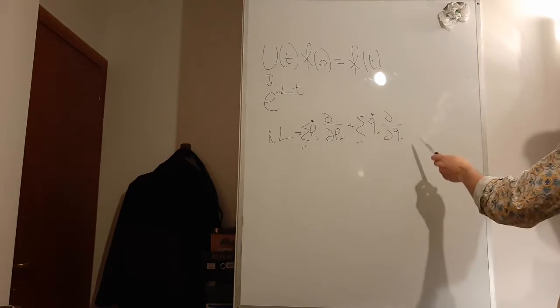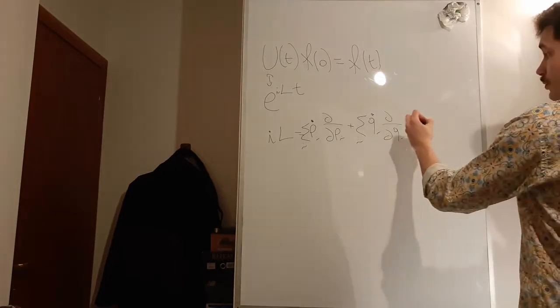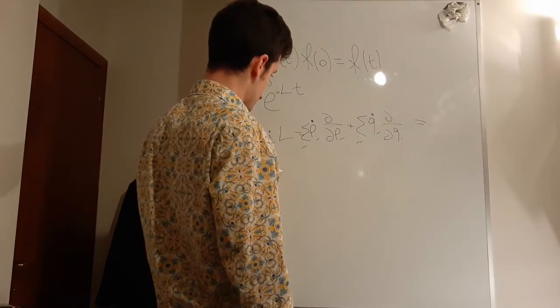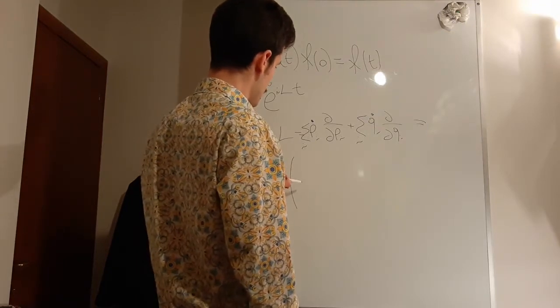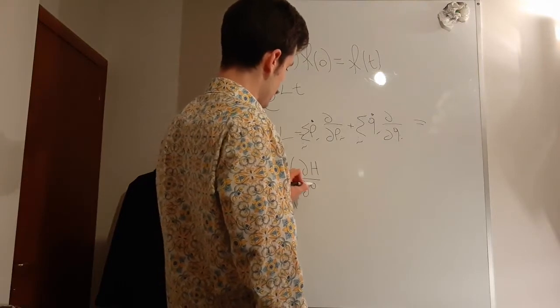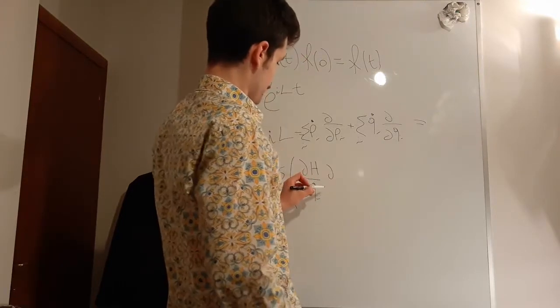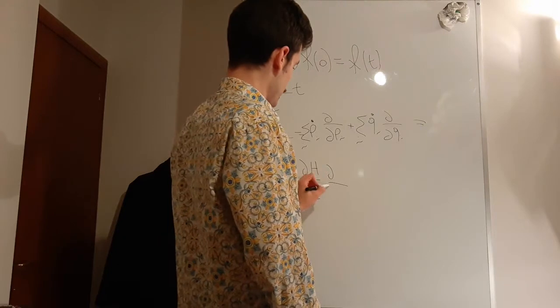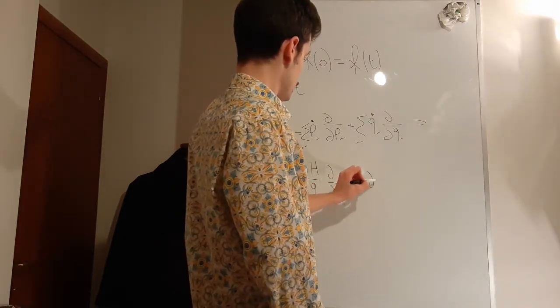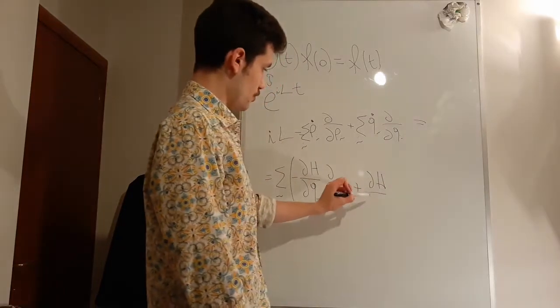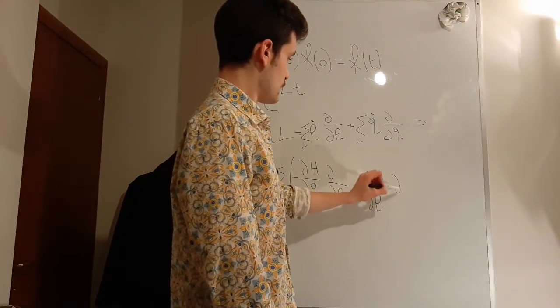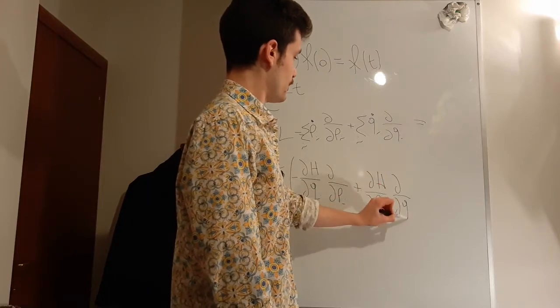If you remember Hamilton's equations, the canonical equations, we can rewrite it like this. Minus the derivative of the Hamiltonian depending on the positions, times the derivative according to the momenta, plus the Hamiltonian derivative according to the momenta, times the derivative according to the positions.